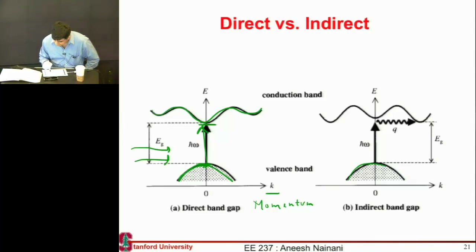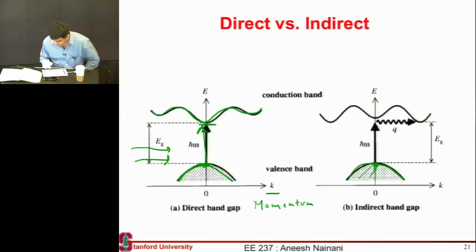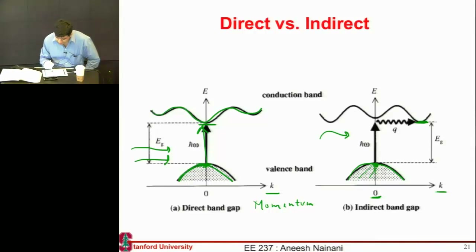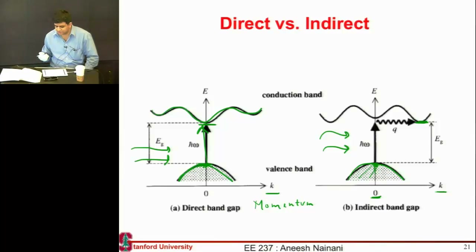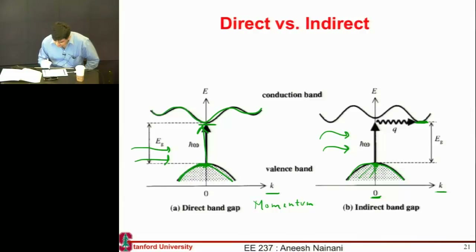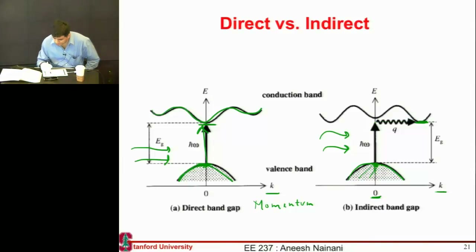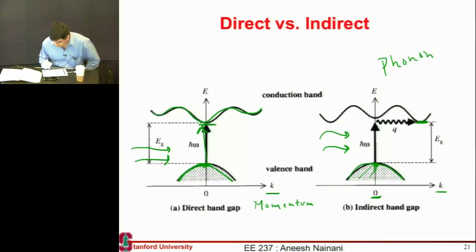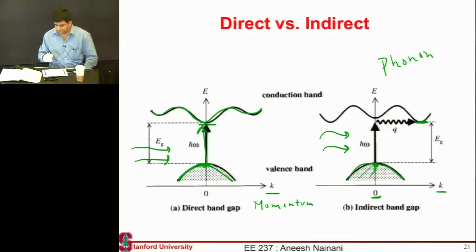In an indirect band gap material, the electrons in the valence band are located at K equal to zero, while the minimum of the conduction band occurs at a different point in K-space — it has a different momentum. This incoming photon has good energy but not enough momentum, so it cannot cause an electron to go from the valence band to the conduction band minimum on its own. It needs the assistance of a phonon, or lattice vibration, to supply that momentum.